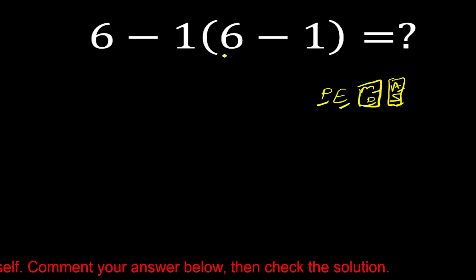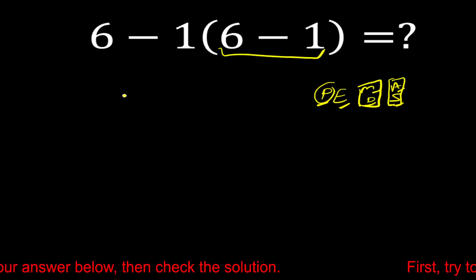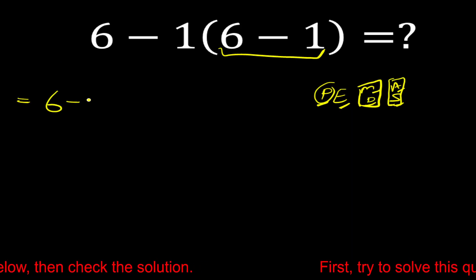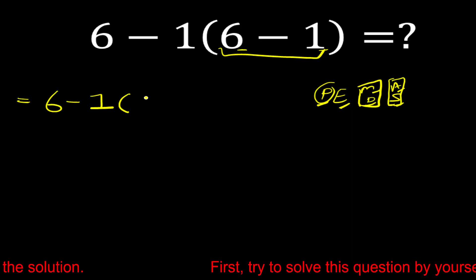So in this problem first we have to solve this parenthesis. Because first priority is parenthesis. So 6 minus 1. Now solve this parenthesis. 6 minus 1 is equal to 5.